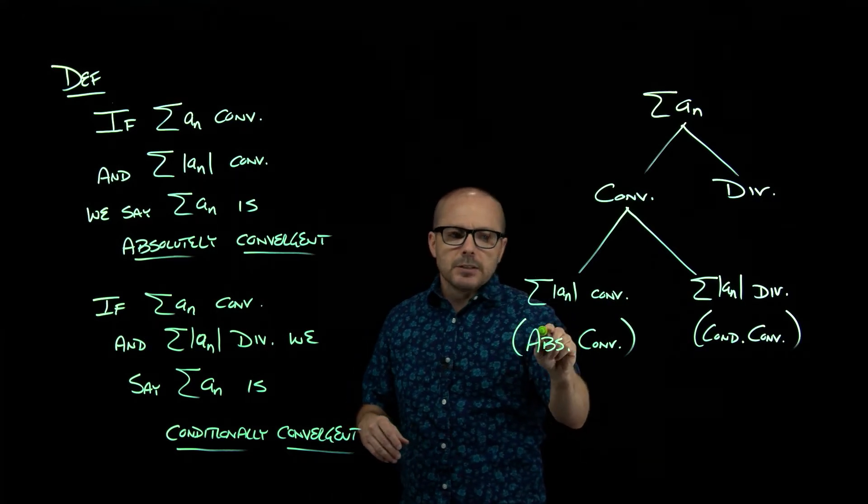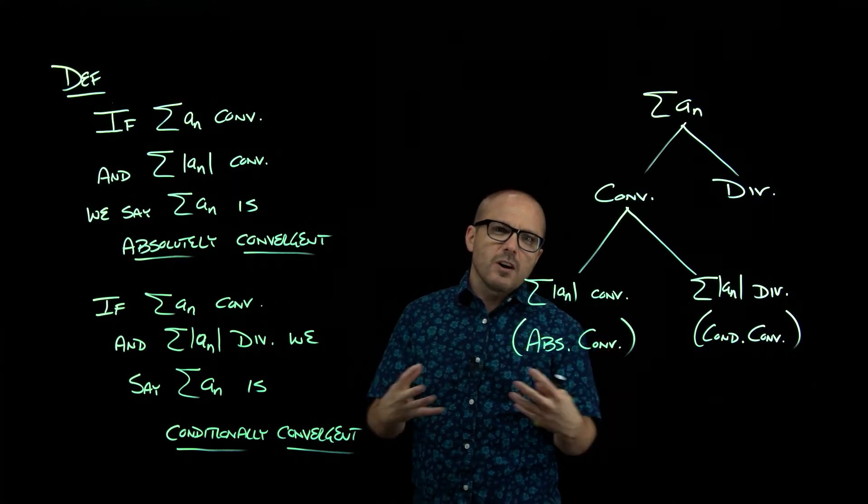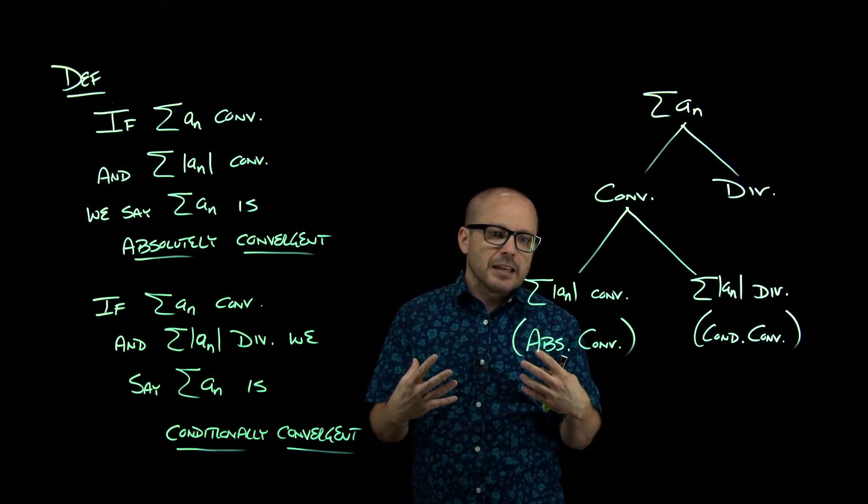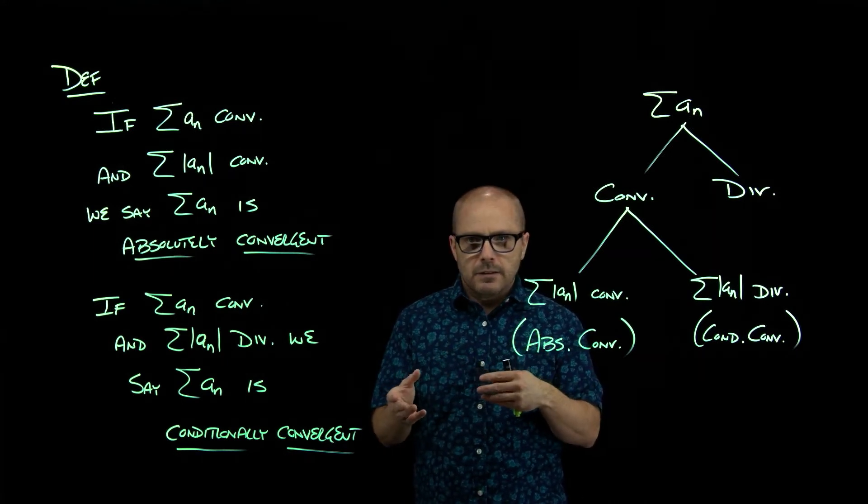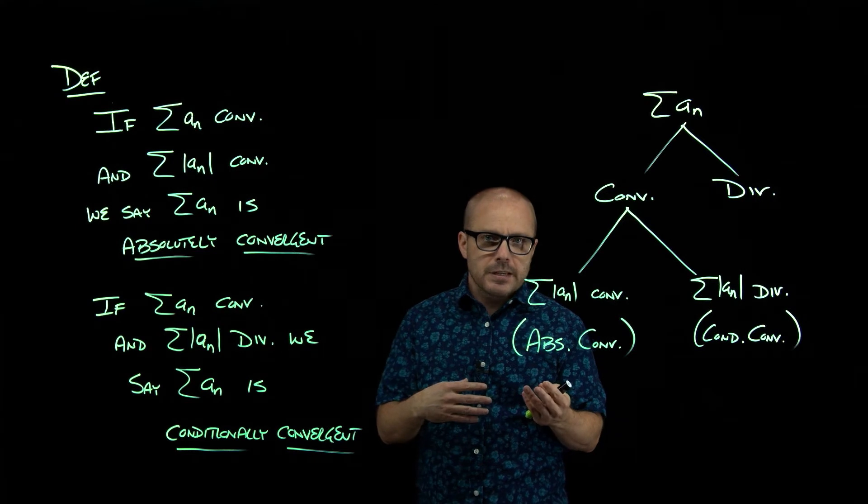Things that are absolutely convergent, it's a stronger type of convergence in the sense that the order doesn't matter. However you want to add them up, it'll always come out the same.